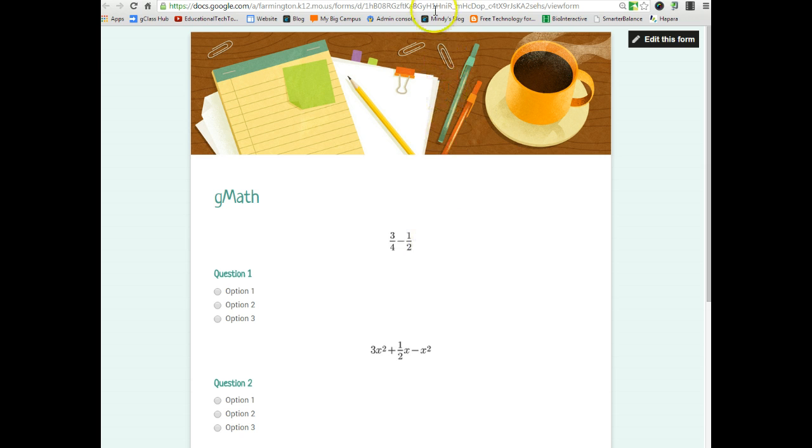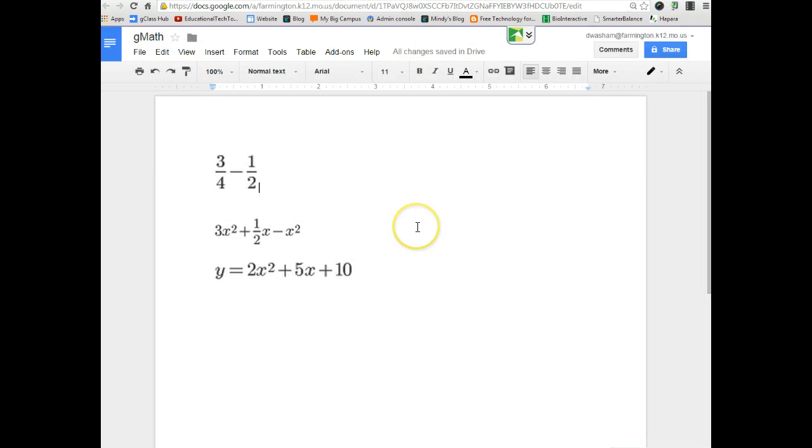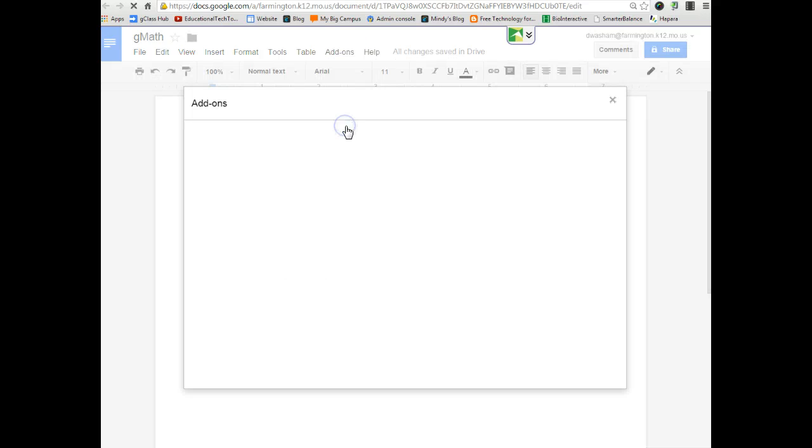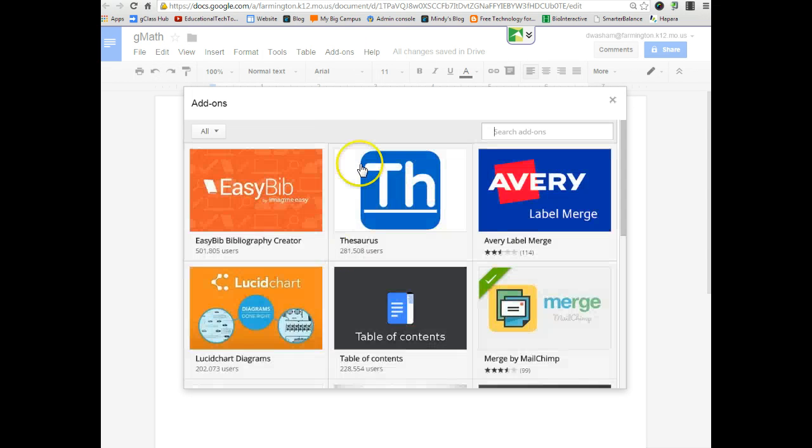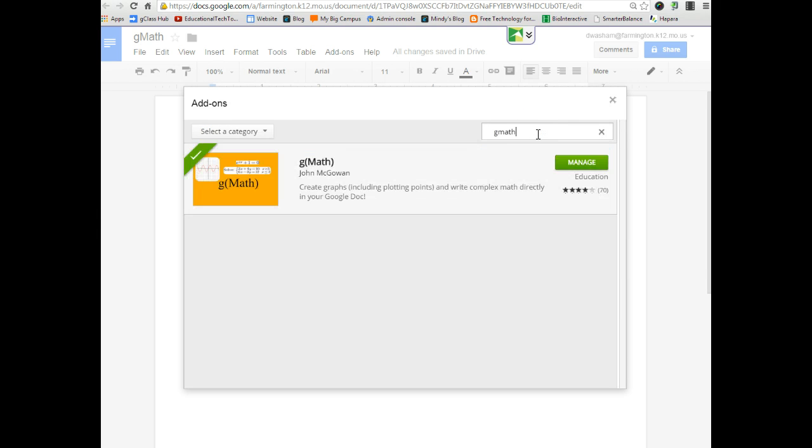It's now much easier than it used to be. What you're going to do is open a new document and search for an add-on. You'll do that by choosing get add-ons, and it will open up all your add-ons. You just want to search for GMath. This is GMath here and you will need to add it. It is free.